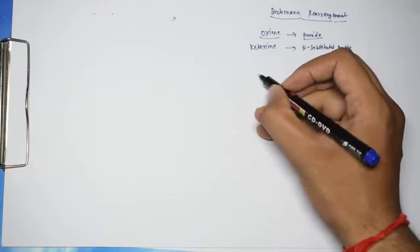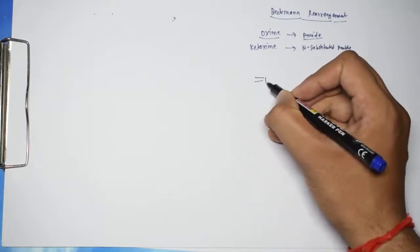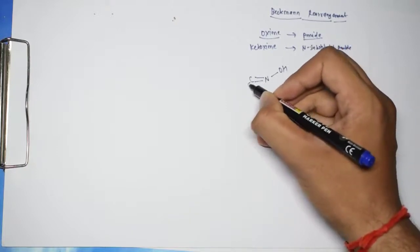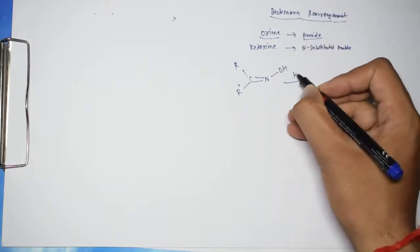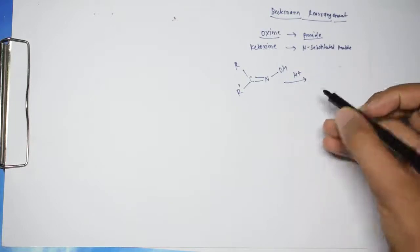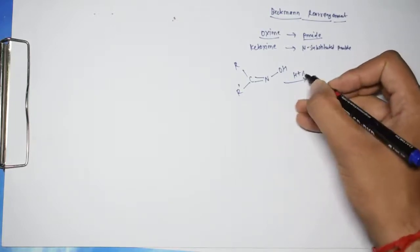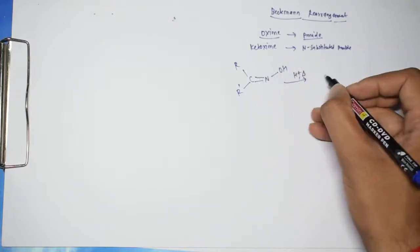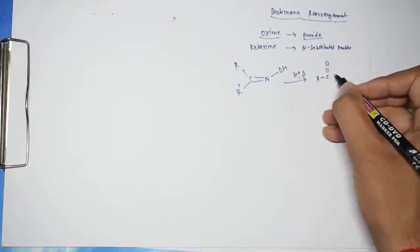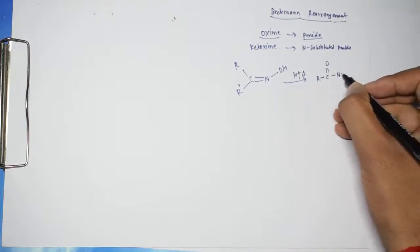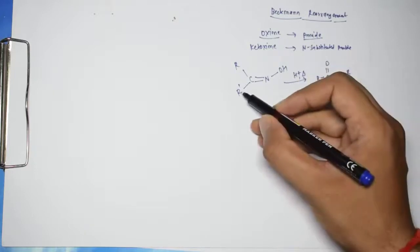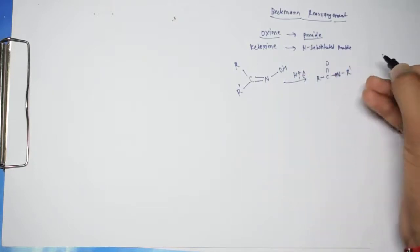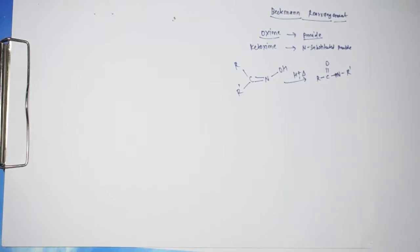For example, if we have one oxime like this — here we have N, here we have OH, here we have R and here we have R'. In the presence of acid, as this is an acid-induced rearrangement, this will get converted into a product like C=O, with N and R. The question is which R will be here — R' will migrate to this position, and we will see how the reaction mechanism proceeds.